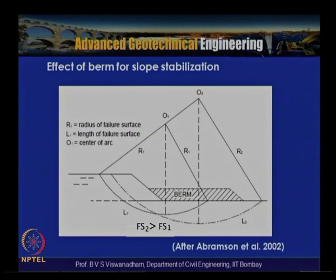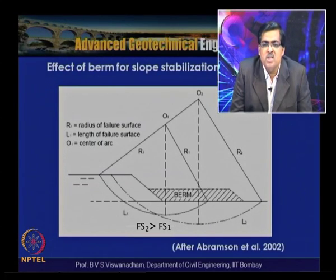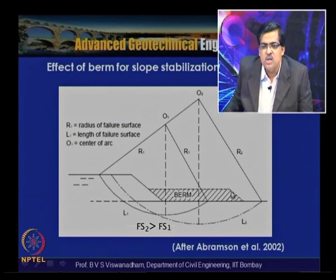The effect of a berm on slope stabilization is shown here. An embankment subject to base failure has a circular arc L1 with centre O1, yielding factor of safety Fs1. By providing a berm, the centre shifts to O2 and the radius becomes R2, yielding Fs2 which is greater than Fs1 — so the berm enhances slope stability. The key parameters are the horizontal extent of the berm from the toe and the required berm height.